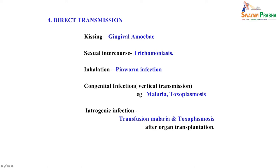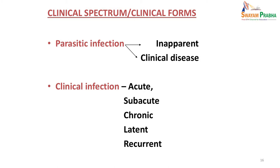Direct transmission can occur by kissing, leading to gingival amoebiasis; sexual intercourse, leading to trichomoniasis; or inhalation, causing pinworm infection. Congenital or vertical transmission occurs in malaria and toxoplasmosis. Iatrogenic infection can also occur if a blood donor sample is not screened for malaria or toxoplasmosis and that infected blood is transfused, or through organ transplantation.